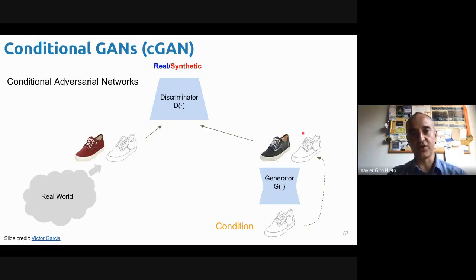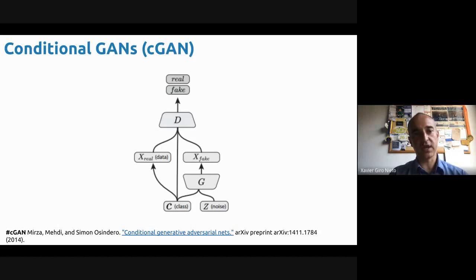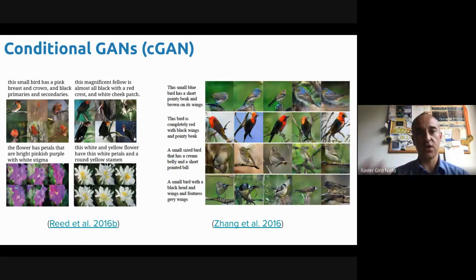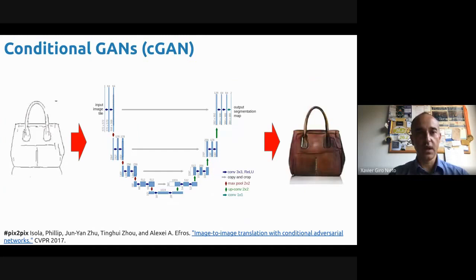This is a scheme from Mirza and Osindero. Some of the works you may have seen: these are images of birds and flowers that were generated with a textual description of the bird or flower. One of the most celebrated applications of this approach is what's called Pix2Pix, in which, as I mentioned, you can do something called image translation — you have a conditioning image and a generated version.